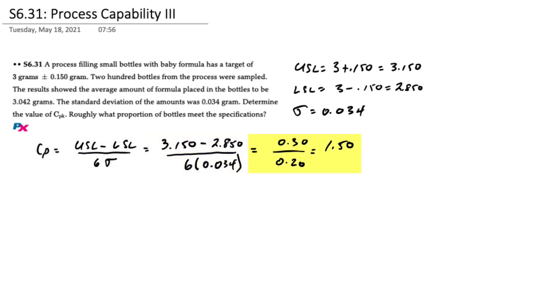That turns into 0.3 divided by 0.204 or a final answer of 1.50. Since it's more than 1.0 this tells us that the process is more than capable of producing within specifications.